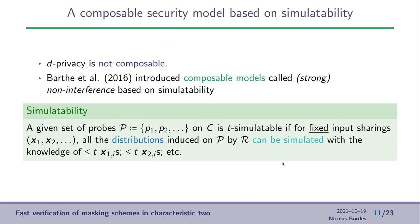The main problem about D-Privacy is that it is not composable, which means that if we have two D-Private circuits, then their composition is not necessarily D-Private. So, we can't chain the gadgets.